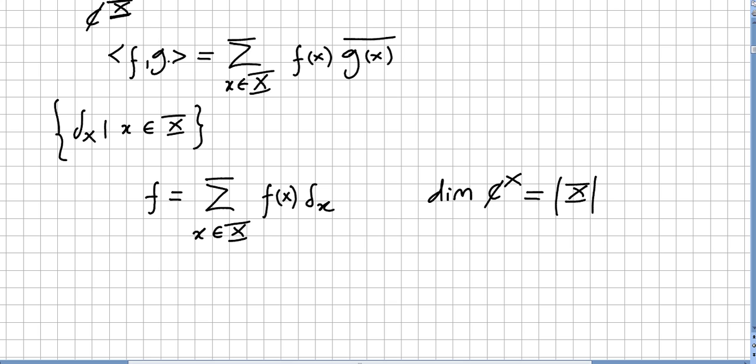This inner product will be given by ⟨f,g⟩ = sum over x in the set X of f(x) times the conjugate of g, g(x) bar.